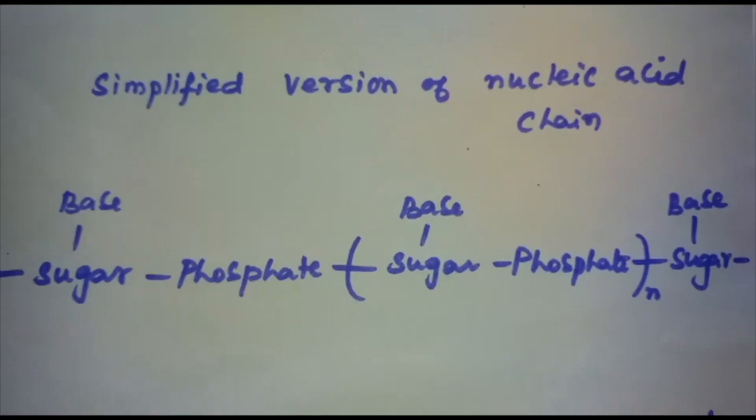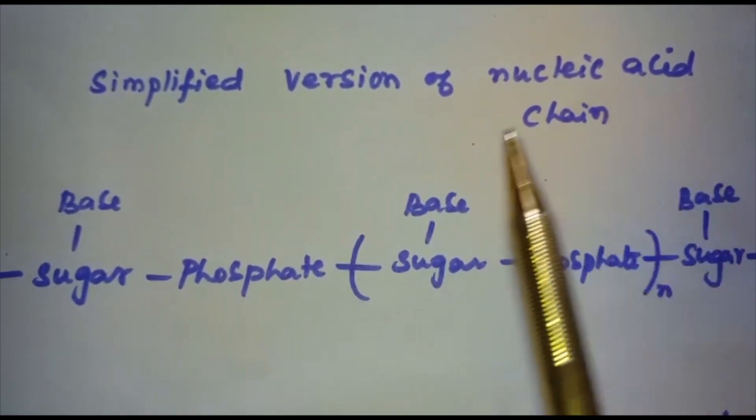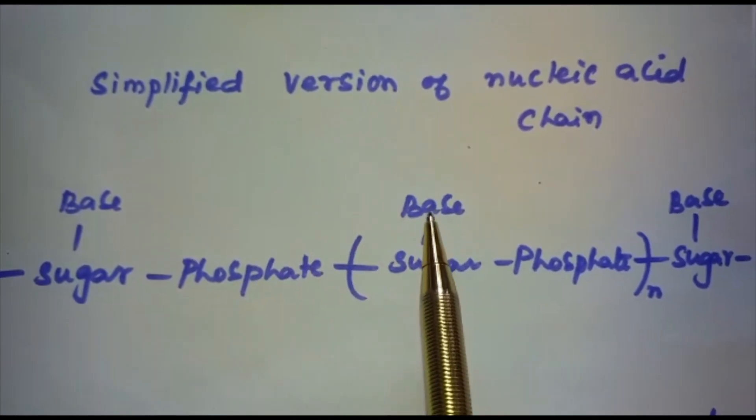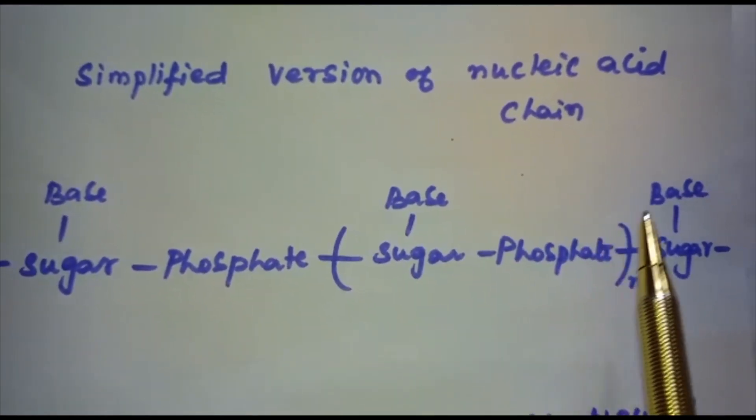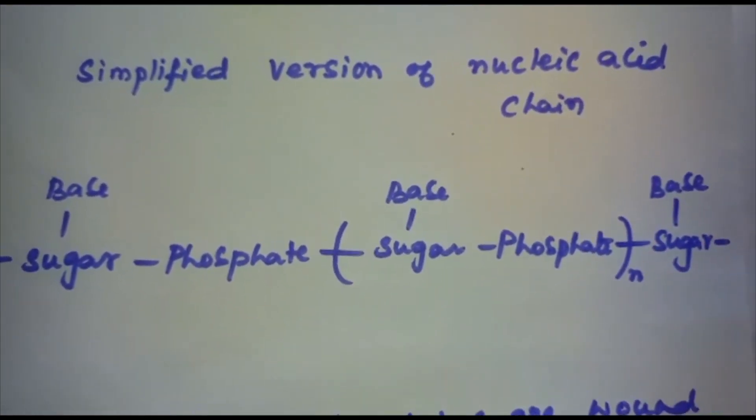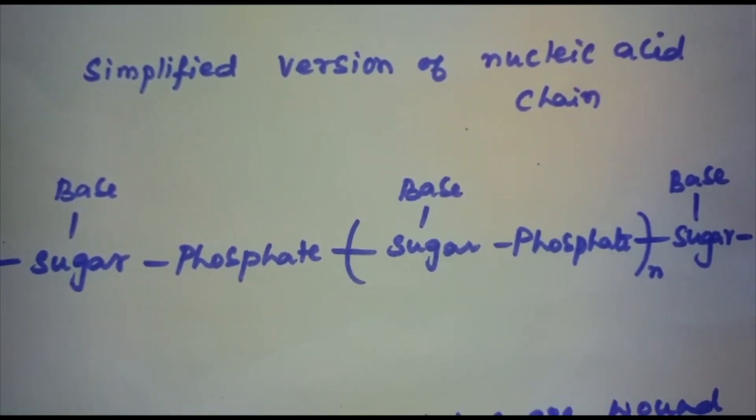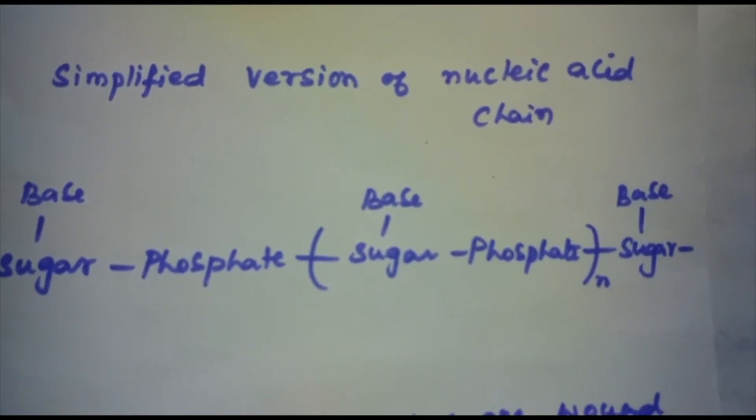This is the simplified version of the nucleic acid chain: sugar-base-phosphate, then base-sugar-phosphate, and so on. This is the simplified version of the nucleic acid chain. The information regarding the sequence of nucleotides in the chain of a nucleic acid is called its primary structure.